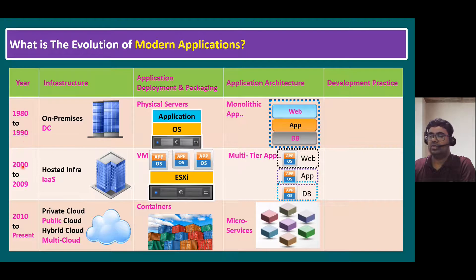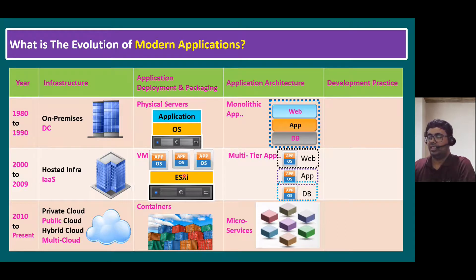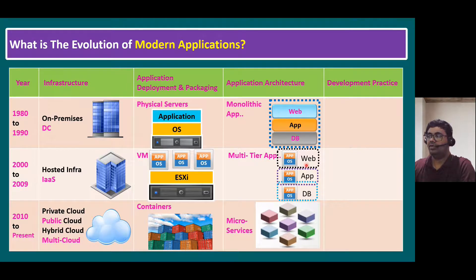Later, moving into 2000 to 2009, on-premises data centers expanded to hosted infrastructure, and most organizations started providing hosting services — that is, infrastructure as a service. The main innovation of this era was virtualization. For example, with VMware ESXi, you could install the ESXi operating system on top of physical hardware and create multiple virtual machines, each with a guest OS and applications. This structure is called multi-tier application architecture, where web, application, and DB each require separate VMs — and you could deploy N-tier as well.